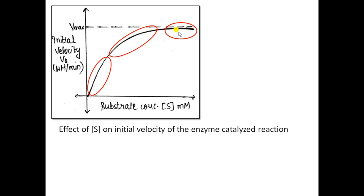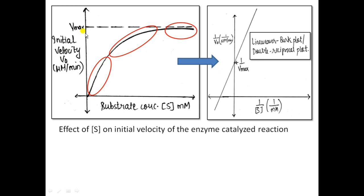From this graph you can only approximately extrapolate the value of Vmax but never get the exact value. To get the exact value, you convert this plot into another plot called the Lineweaver-Burk plot or the double reciprocal plot. Instead of V0 on the y-axis you take 1/V0, and instead of substrate concentration on the x-axis you take 1/[S] — taking reciprocals twice, hence the name double reciprocal plot.